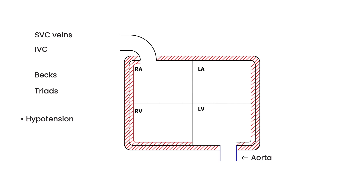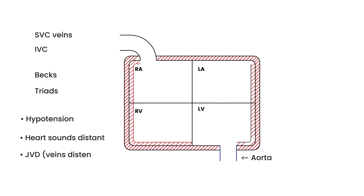The first component of Beck's triad is hypotension — low blood pressure. The second is that heart sounds will be distant or muffled. And the third is jugular venous distension, meaning the neck veins will be distended. I'll explain why each of these happens.